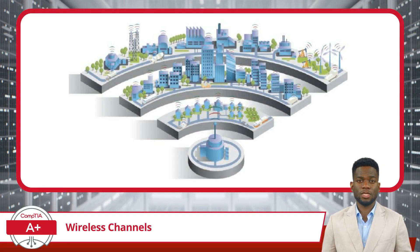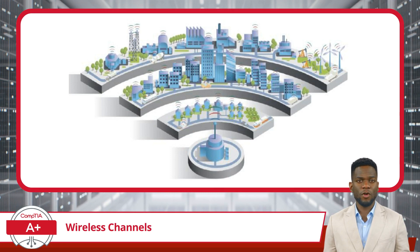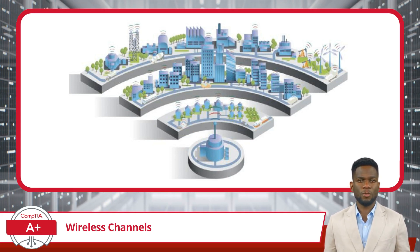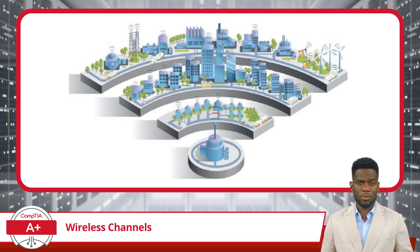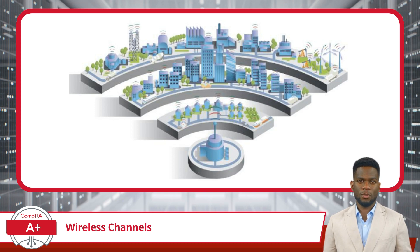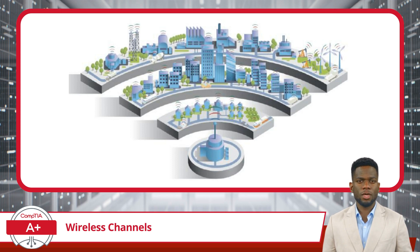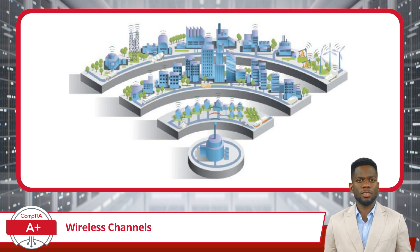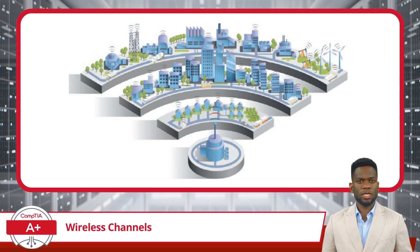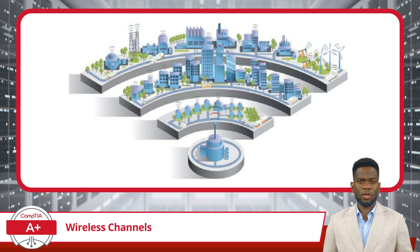With these frequency bands, it is also important to understand that various regions around the world have distinct regulations and restrictions on these frequency ranges. This is primarily to manage and minimize interference between different wireless services. Additionally, these regulations are in place to ensure public safety by preventing disruption in critical communication services, such as those used by emergency responders. These regulations may include broadcast power limits or channel restrictions, and adhering to these regional regulations is essential for the optimal and legal operation of wireless networks and devices.